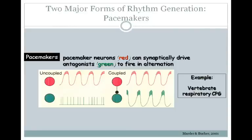There are two major forms of rhythm generation. The first involves pacemaker neurons. Pacemaker neurons, like the red neuron shown here, have endogenous bursting activity — they fire and then stop firing. This endogenous bursting activity is due to the membrane properties of the neuron. If you couple an endogenous bursting neuron, like this red neuron, with a green tonically active neuron, you can get rhythm generation. When the red neuron is on, the green neuron is off, and when the green neuron is on, the red neuron is off. An example of this type of rhythm generator can be found in the vertebrate respiratory central pattern generator.